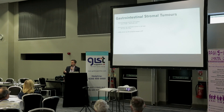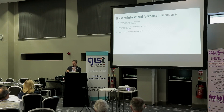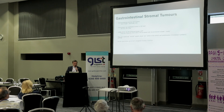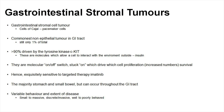A tyrosine kinase is a mechanism whereby a cell communicates with the environment outside. The commonest one people would know is insulin — when your glucose goes up, the cells respond and tell the body to store glucose. These molecules are a molecular on-off switch. Very simplistically, if it's stuck to on, the cells will grow. But that's also its Achilles heel — it makes it exquisitely sensitive to targeted therapies, of which imatinib is probably the best.